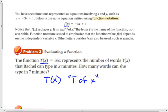Alright, so t of x equals 65x represents a number of words, t of x, that Rachel can type in x minutes. How many words can she type in 7 minutes?